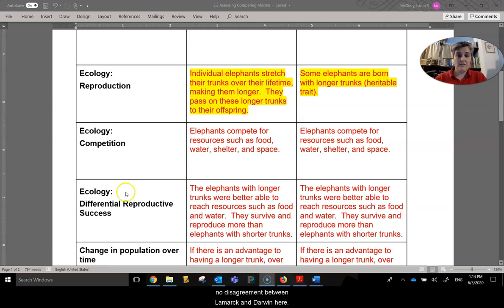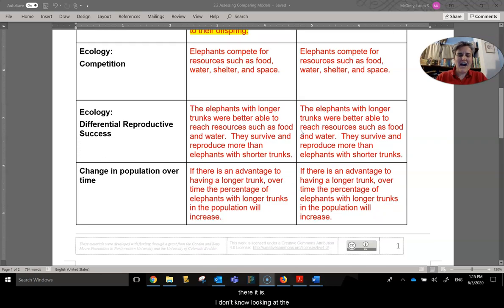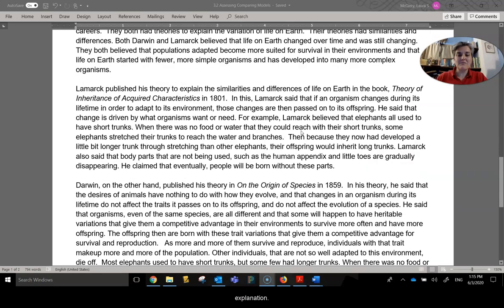The biggest difference, the difference, is this reproduction of Lamarck's theory of elephants willfully stretching their trunks out over time to make them longer, whereas Darwin says that the elephants are born with the longer trunks, the genes that make that. So this is the point where I would make some sort of comment about how I would have willfully increased my height at some point in time. But maybe there it is. I don't know. Anyway, looking at the explanation.